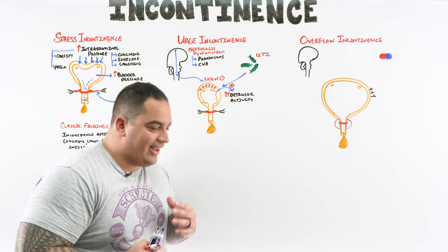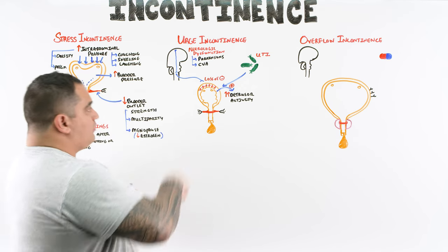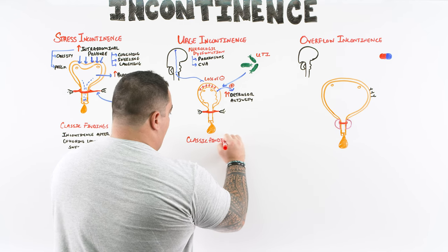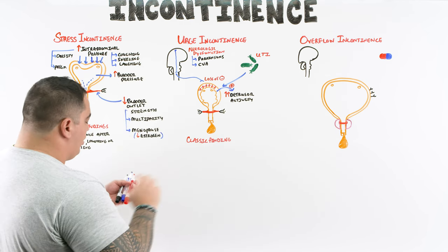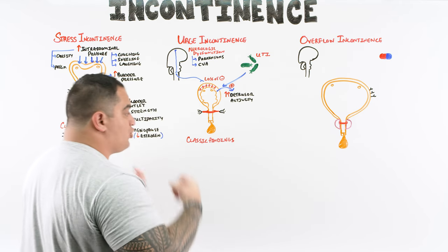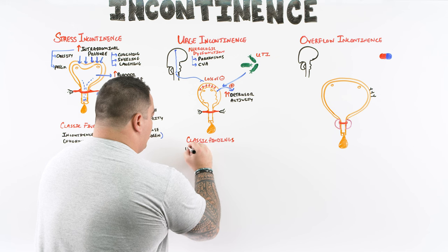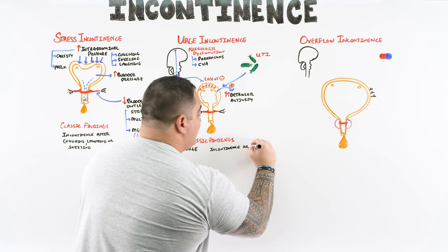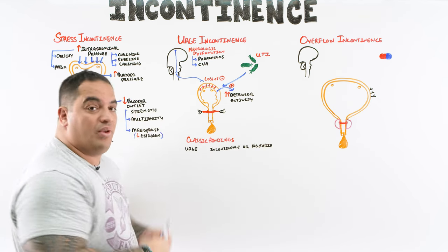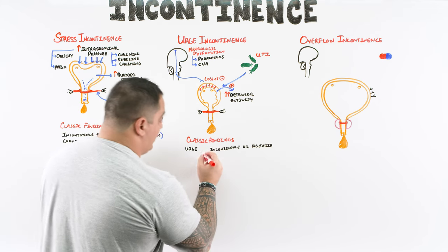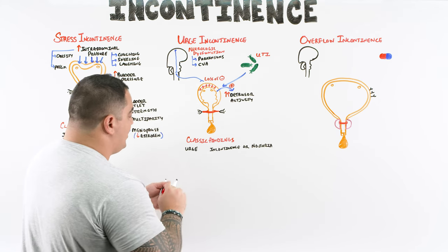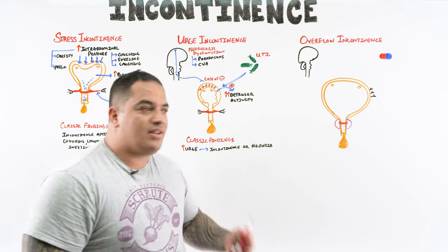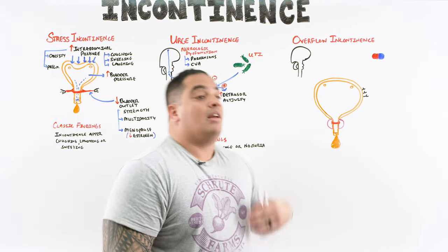The classic finding in urge incontinence is loss of urine preceded by a strong urge to go to the bathroom, followed by incontinence. These patients often have frequent bouts of nocturia — consistently going to the bathroom during the night. An increased urge followed by incontinence or nocturia is the most common presentation.